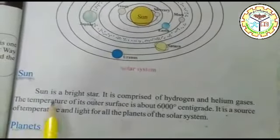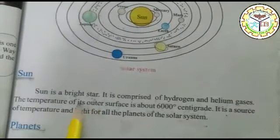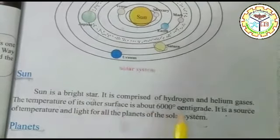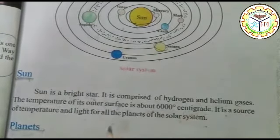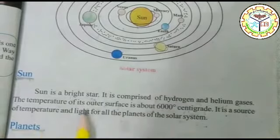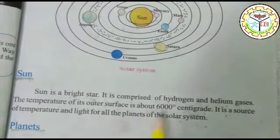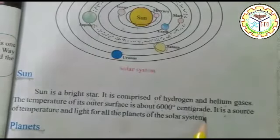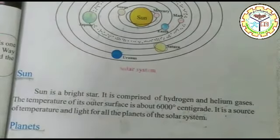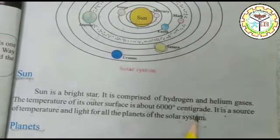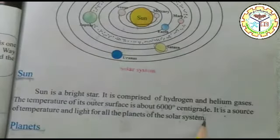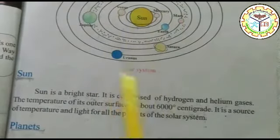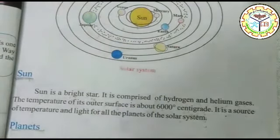Next point: Sun. Sun is a bright star — سورج ایک روشن ستارہ ہے۔ It is comprised of hydrogen and helium gases — یہ hydrogen اور helium gases کا مجموعہ ہے۔ The temperature of the outer surface is about 6000 centigrade — اس کی بیرونی سطح کا درجہ حرارت اندازاً 6000 centigrade ہے۔ It is a source of temperature and light for all the planets of the solar system — یہ نظامِ شمسی کے تمام سیاروں کے لیے حرارت اور روشنی کا سرچشمہ ہے۔